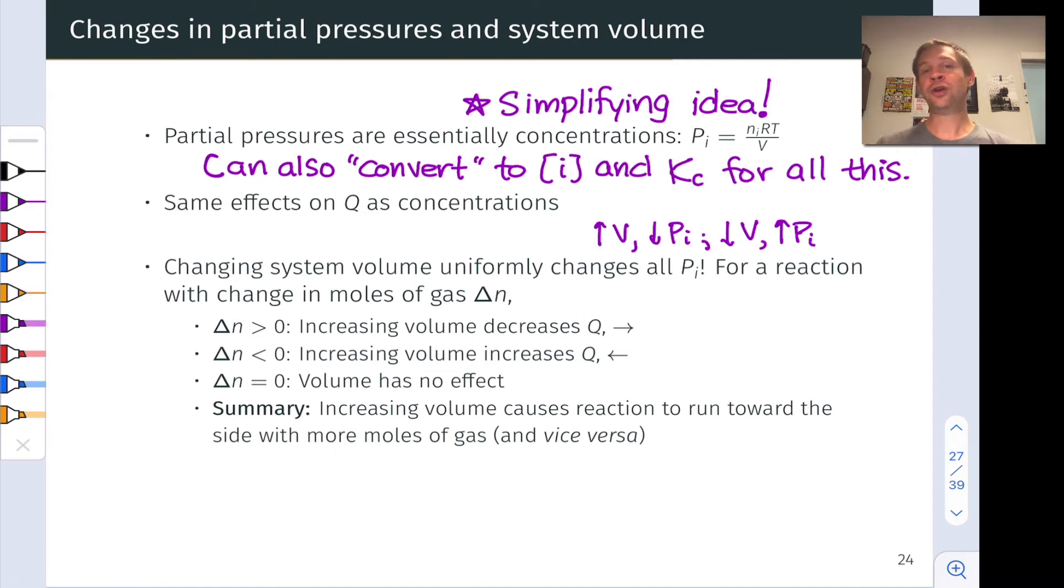If the change in moles of gas is positive, increasing the volume will decrease the value of the reaction quotient and the reaction will go forward. If the change in moles of gas is negative, if we have more moles of gas on the reactant side than the product side, increasing the volume will increase the value of Q and the reaction will run in reverse.